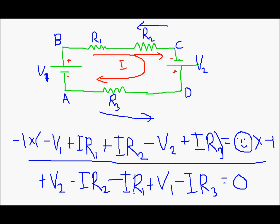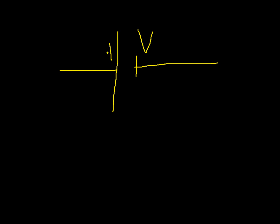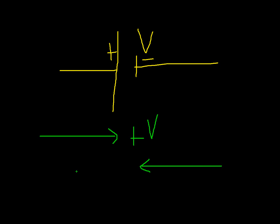Next I will briefly show you how to apply KVL if you encounter other elements such as capacitors. We will take the voltage source first. If you are travelling in such a way that you meet the positive plate first, add V to the equation. If you meet the negative plate first, subtract V from the equation.